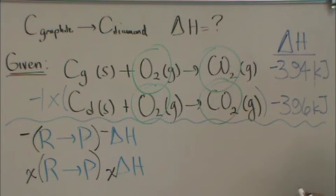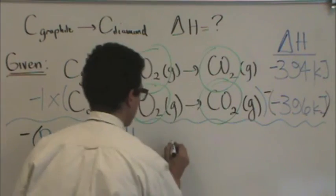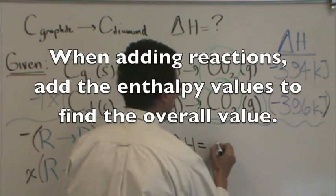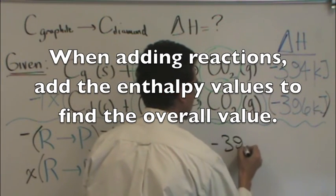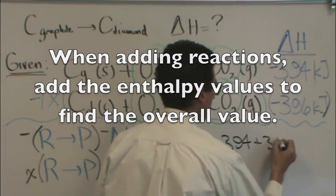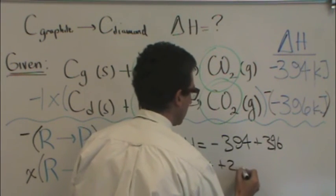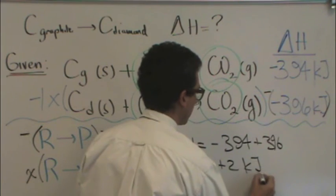Well, how do I find the delta H? Well, when I do that, when I multiply the second one by minus 1, I'm multiplying this by minus 1. So my second delta H here, the one for the second reaction, is going to turn out to be a positive. So when I find my overall delta H for this reaction, it's going to be negative 394 plus 396. And that's going to be plus 2, in this case, units of kilojoules.